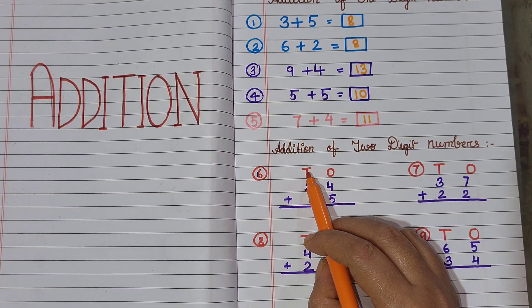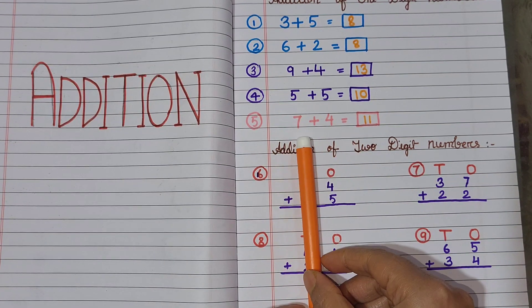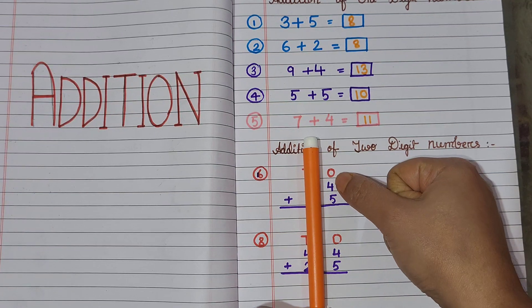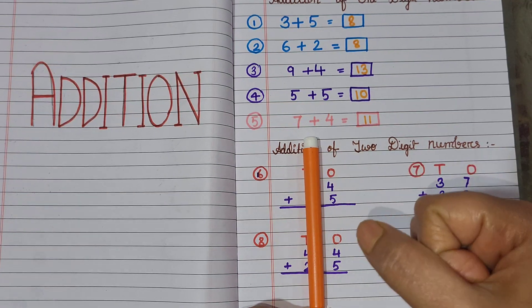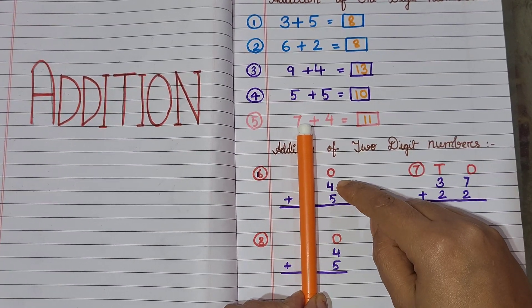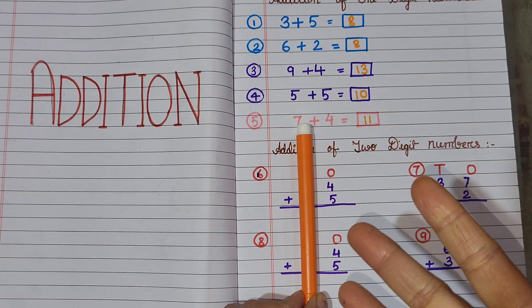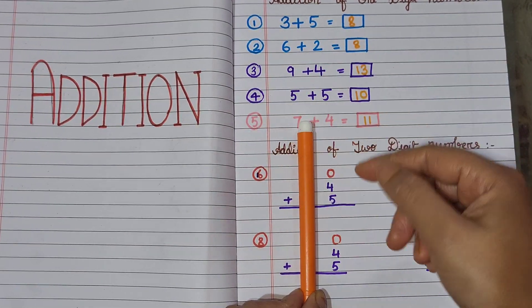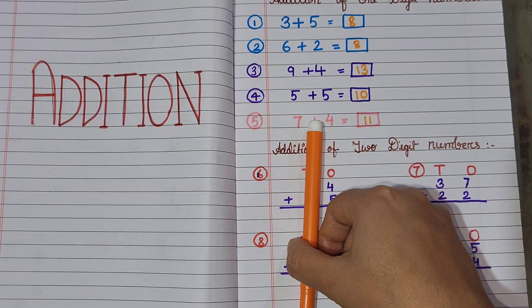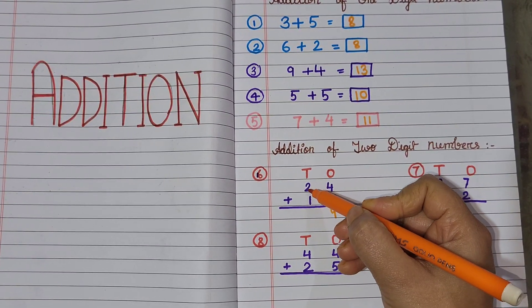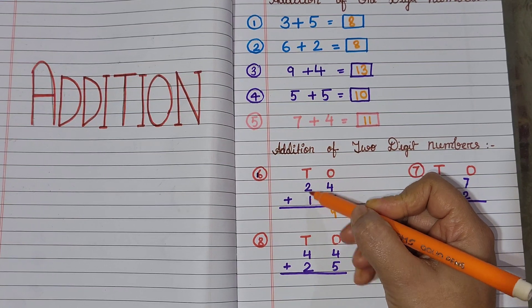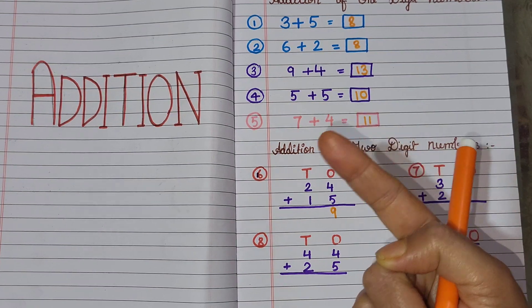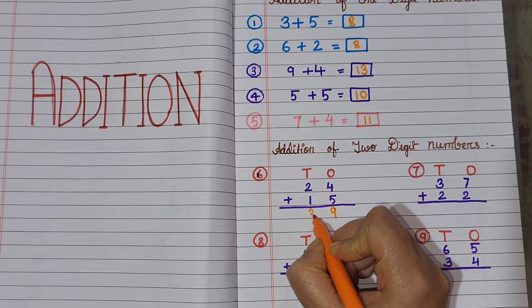First, ones and tens. How do we do? We add the last numbers first. Which numbers? 4 and 5. 4 in my mind, 5 fingers up. 4 ke baad konsa number? 5, 6, 7, 8, 9. 5 and 4 add hone se kitna aayega? 9. Next tens mein jo hai, 2 and 1 ko add karenge. 2 plus 1, 2 in my mind, 1 finger up. 2 ke baad konsa number? 3. That means 39.